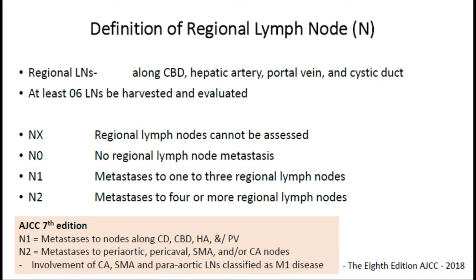As per AJCC 8th edition, the regional lymph nodes are along the common bile duct, hepatic artery, portal vein, and cystic duct. At least six lymph nodes should be harvested for adequate lymphadenectomy and prognosis. N1 is metastasis to 1 to 3 lymph nodes and N2 is 4 or more lymph nodes. In the seventh edition, N1 was metastasis to nodes along the cystic duct, common bile duct, hepatic artery, and portal vein, and N2 was metastasis to periaortic, pericaval, SMA, and celiac artery nodes — but these lymph nodes represent metastatic disease, that is M1 status.